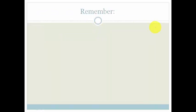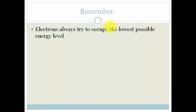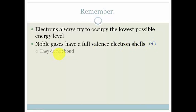So what do we need to remember? Electrons always try to occupy the lowest possible energy level. They are quite lazy and they want to conserve energy. Noble gases have full valence electron shells, which means 8 electrons.